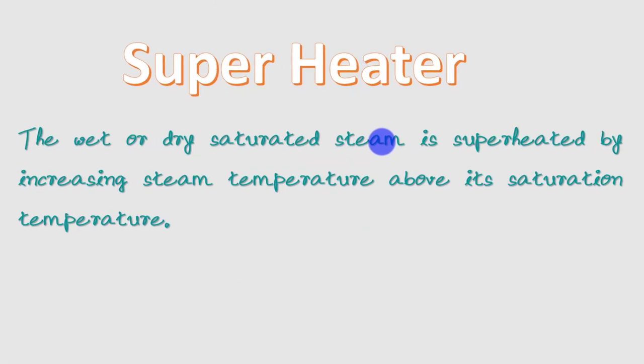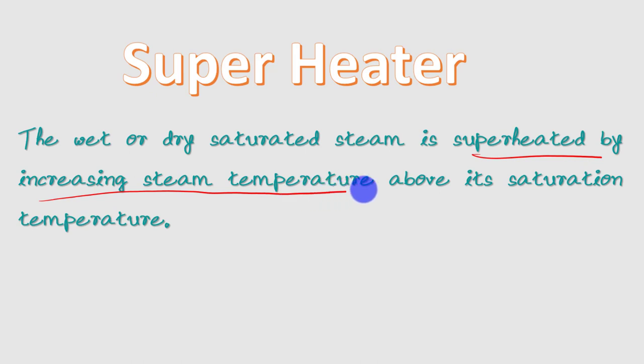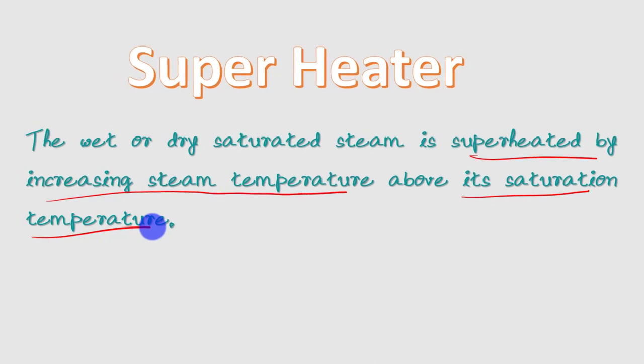Now, what is a superheater? In a superheater, the wet or dry saturated steam is superheated by increasing the steam temperature above the saturation temperature. Whether it is wet steam or dry saturated steam, the temperature is the saturation temperature, but by using a superheater, the temperature of the steam is increased above the saturation temperature.